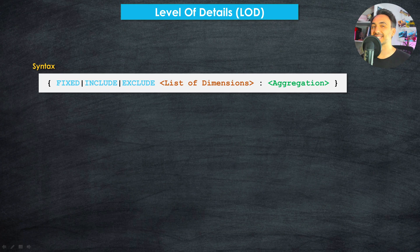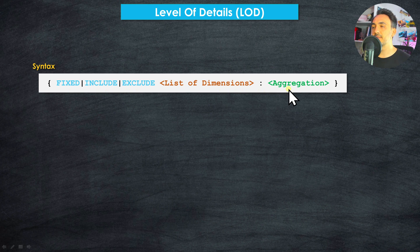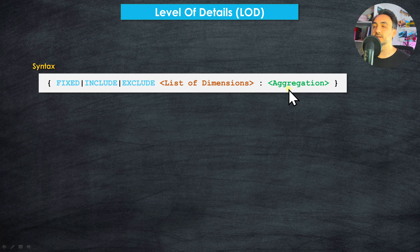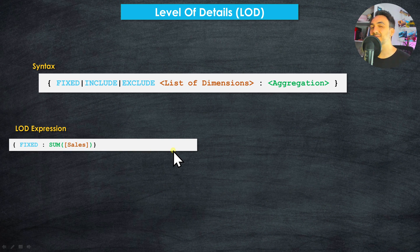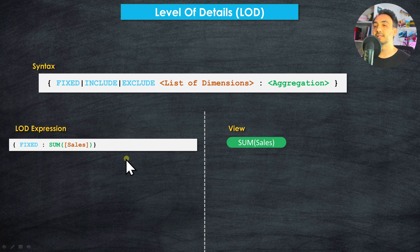Now let's understand the syntax of LOD expressions. They start with the function name — either fixed, include, or exclude — followed by a colon. Then we define the aggregation, similar to aggregate calculations: sum of sales, average of sales, max, min, and so on. The most common aggregation used is sum of something. For example, with fixed and no dimensions specified, we write the sum of sales — telling Tableau to calculate the sum of sales without considering any dimensions.